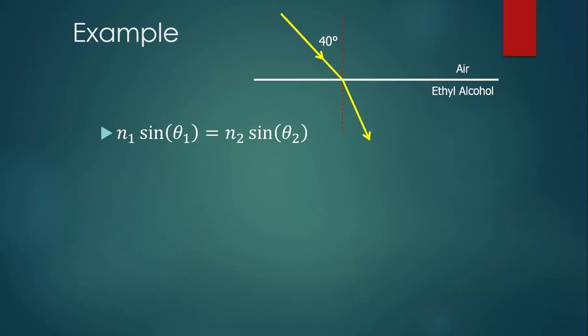We can start with Snell's Law, n1 sin theta 1 equals n2 sin theta 2, and we can plug in everything that we know. We can look up the indices of refraction on our reference table. Air is 1.00, and the angle in air is 40 degrees.